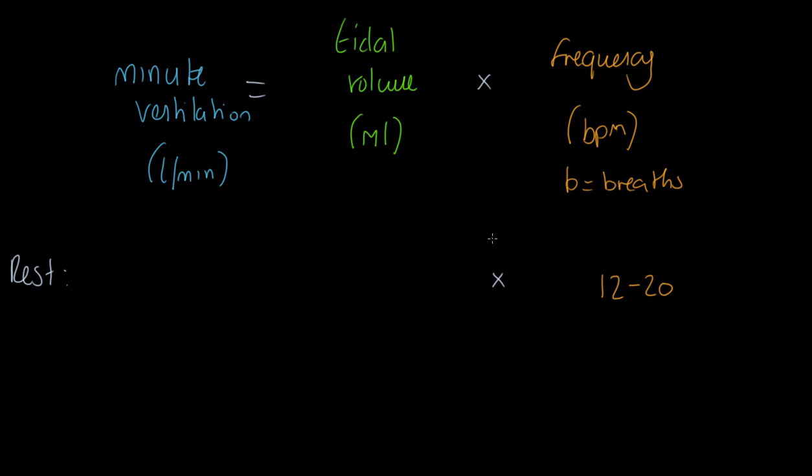We multiply that by how much breath we take in per breath and also how much we breathe out. At rest, that's in the region of 500 milliliters or half a liter of air per breath. That means our resting minute ventilation is going to be something between six to ten liters per minute. If I take 12 breaths at 500ml, that would be six liters per minute. If I take 20 at 500ml, it would be ten liters per minute.